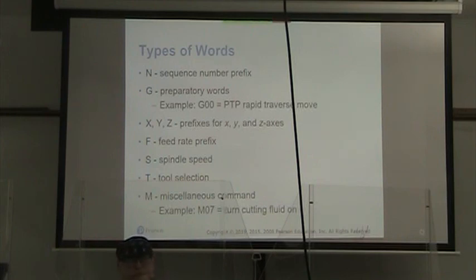The types of words. N is a sequence number prefix. G are preparatory words. The example we give is G00 equals point-to-point rapid traverse move. X, Y, and Z are prefixes for x, y, and z axes. F is the feed rate prefix. S is spindle speed. T is tool selection. And M is miscellaneous command. The example they give is M07 equals turn cutting fluid on.